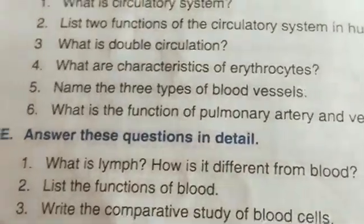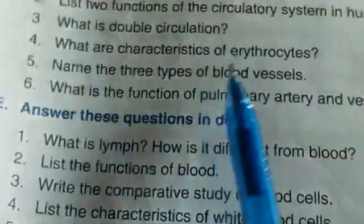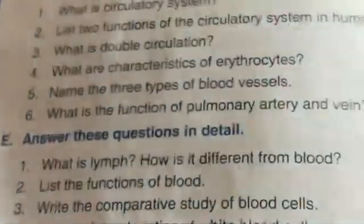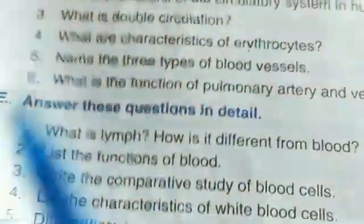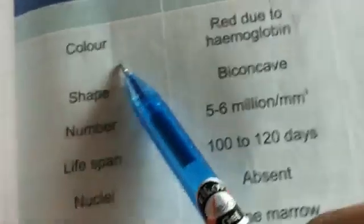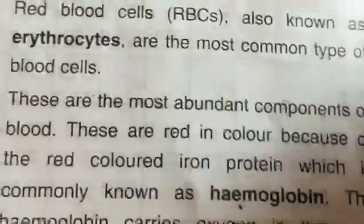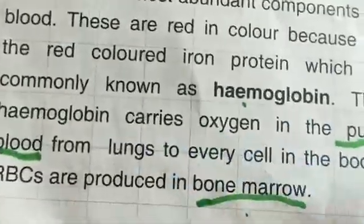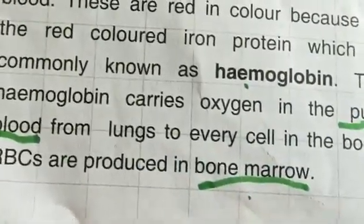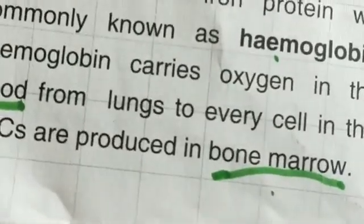What are the characteristics of erythrocytes — that means red blood cells. You can take help from the table on page number five: color, shape, number, lifespan — everything is there. You can write that these are the abundant components of the blood, they are red in color because of the presence of hemoglobin, hemoglobin carries oxygen in the pure blood to every cell, and red blood cells are produced in the bone marrow.